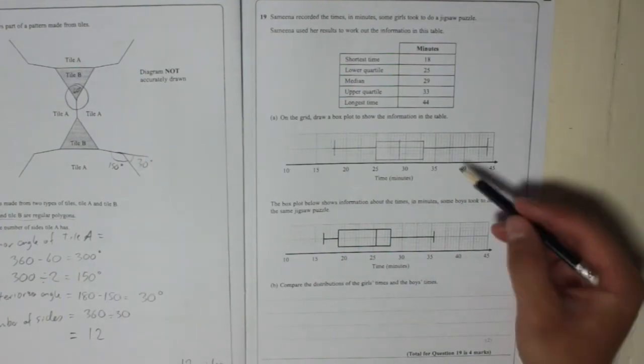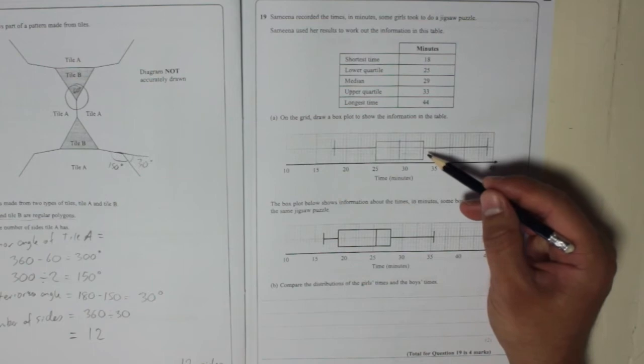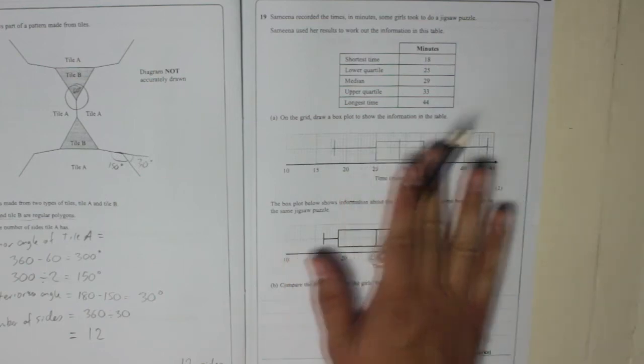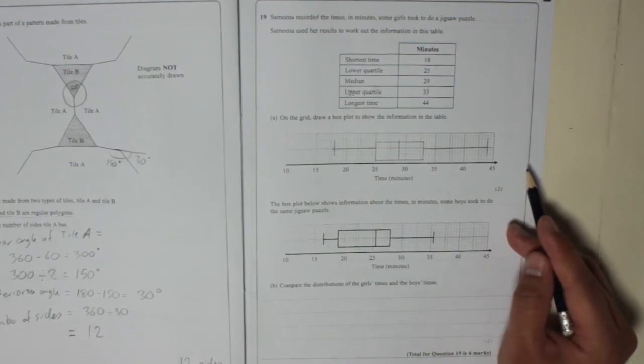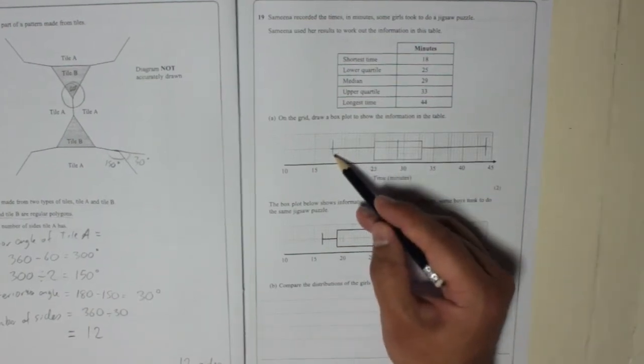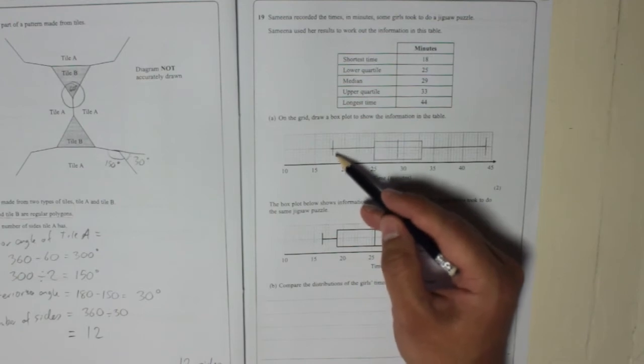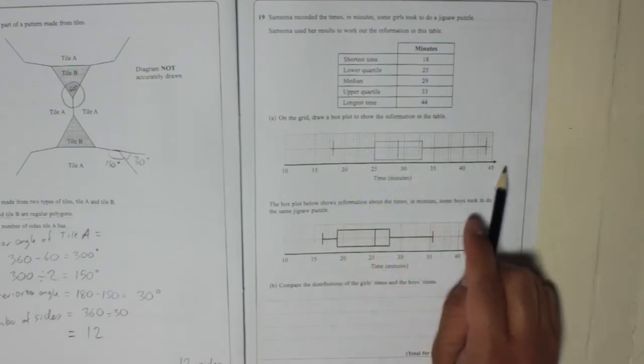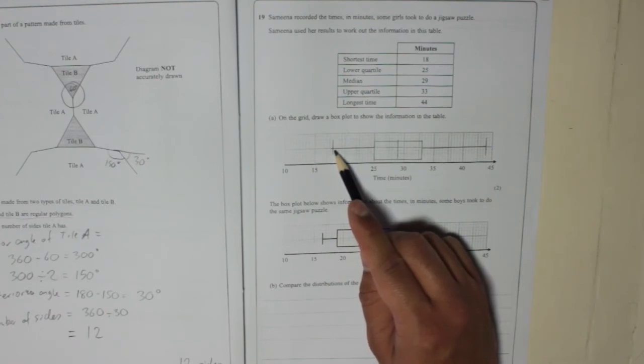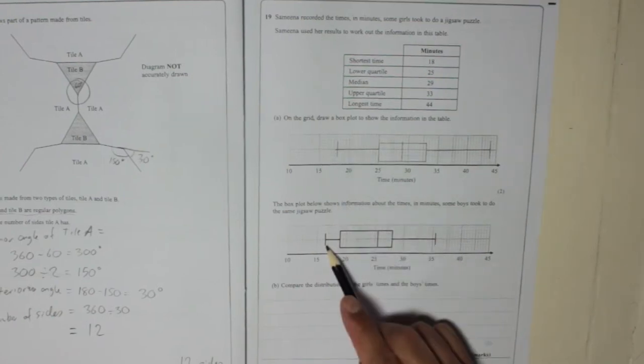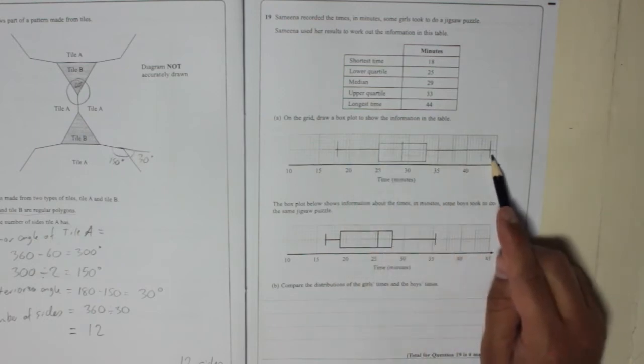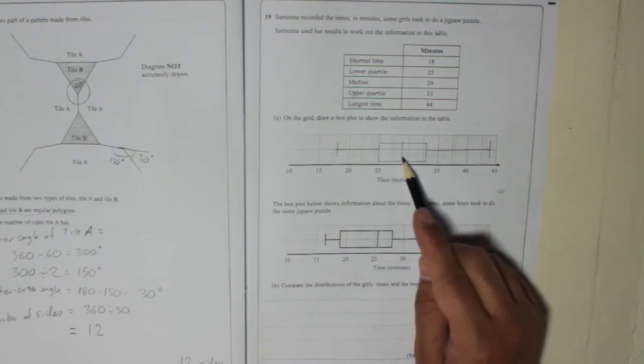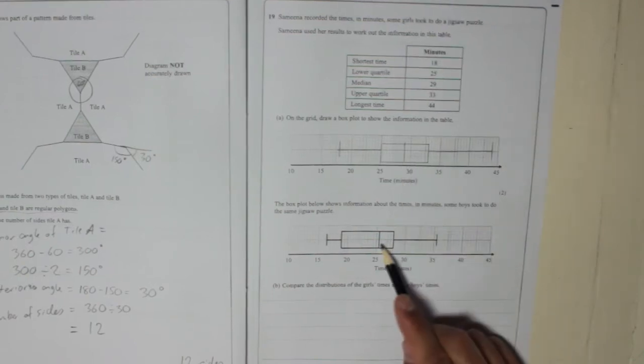If you look at this, the girls' times generally were more over here, so it means they took longer. Remember, the more along that way you are, the slower you are. The fastest girl wasn't as fast as the fastest boy. And the slowest girl was not as slow as the slowest boy. The median of the girls' times is slower than the median of the boys' times.